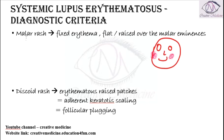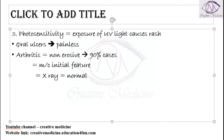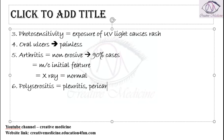So the first criterion is malar rash, second is discoid rash, third is photosensitivity, fourth is oral ulcers, and fifth is arthritis. The sixth criterion is polyserositis. Polyserositis includes pleuritis, pericarditis, and ascites — these three make up the polyserositis criterion.